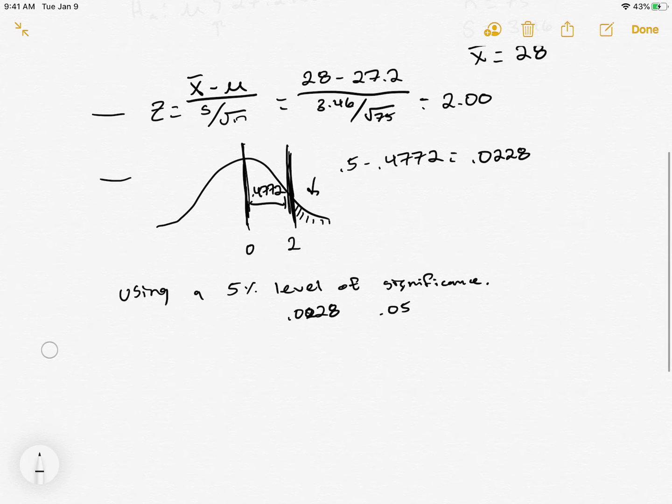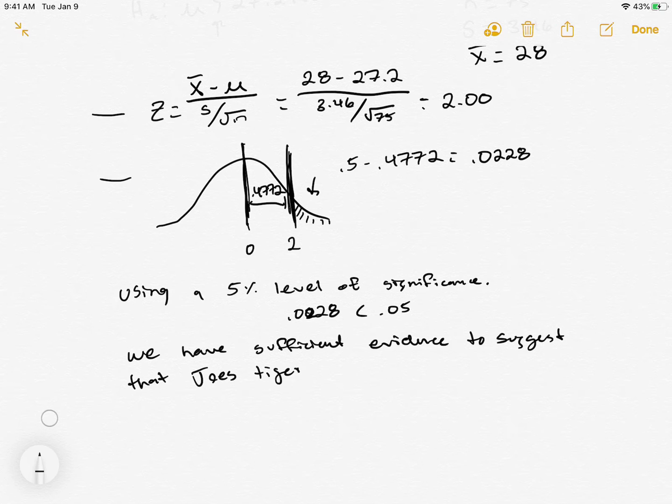So we compare our p-value to our level of significance, which is 0.05. And, oh, I wrote that wrong there. That's 0.022. Anyways, it's still less. And so what we say is we have sufficient evidence to suggest that Joe's Tigers weigh more than 27.2 pounds. It's a beautiful thing, hypothesis testing.